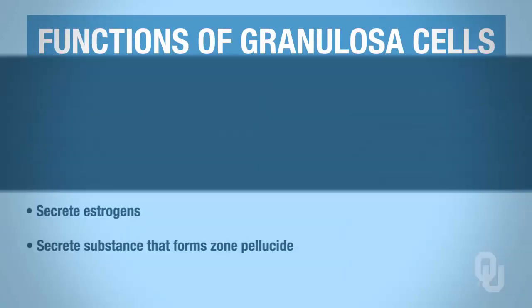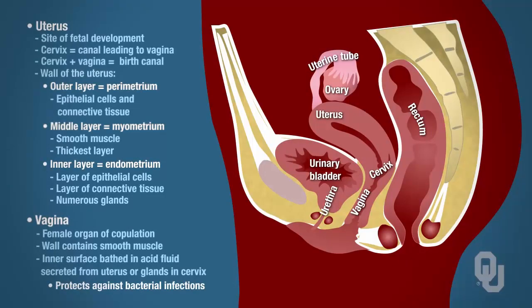Continuing on with the reproductive tract of the female, we're going to focus momentarily on the uterus as well as the vagina. What I want to focus on is the wall of the uterus — there are three layers. There's the outermost layer called the perimetrium, which has epithelial cells and connective tissues. There's a middle layer called the myometrium, composed of smooth muscle. And then the most important layer for us is the endometrium, the innermost layer of the uterine wall, which we'll talk a lot about when we discuss the menstrual cycle. The vagina is the female organ of copulation, with lots of smooth muscle and glands associated with it.